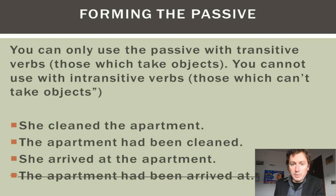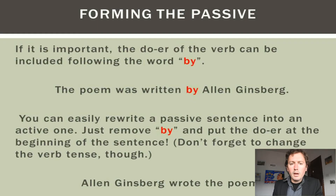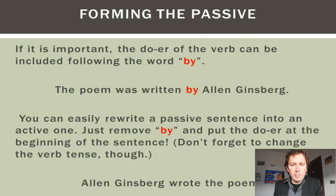It's important to note that you can only use the passive voice with transitive verbs — that means verbs that can take an object. An intransitive verb, which cannot take an object, cannot be made into the passive voice. For example: she cleaned the apartment can become the apartment had been cleaned, because 'clean' can take an object. However, she arrived at the apartment cannot become the apartment had been arrived at, because 'arrived' is intransitive. At other times it's desirable to include the doer using 'by': the poem was written by Allen Ginsberg.